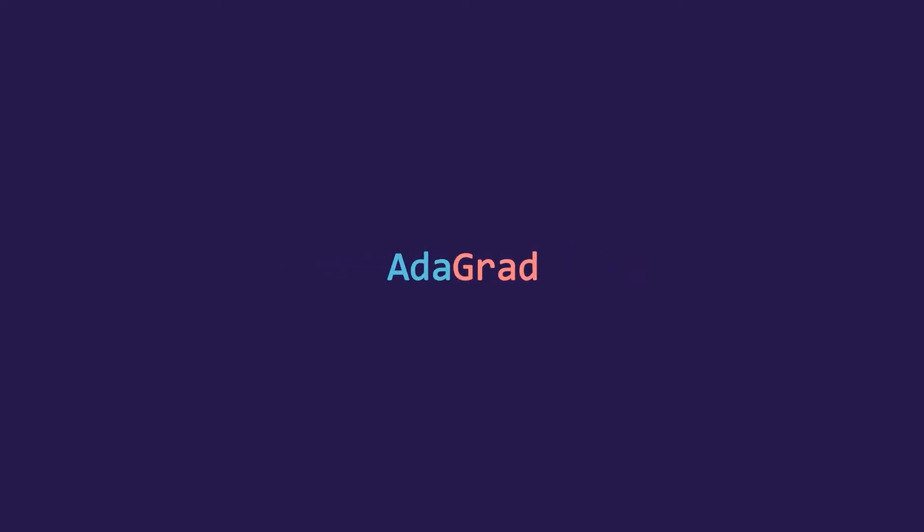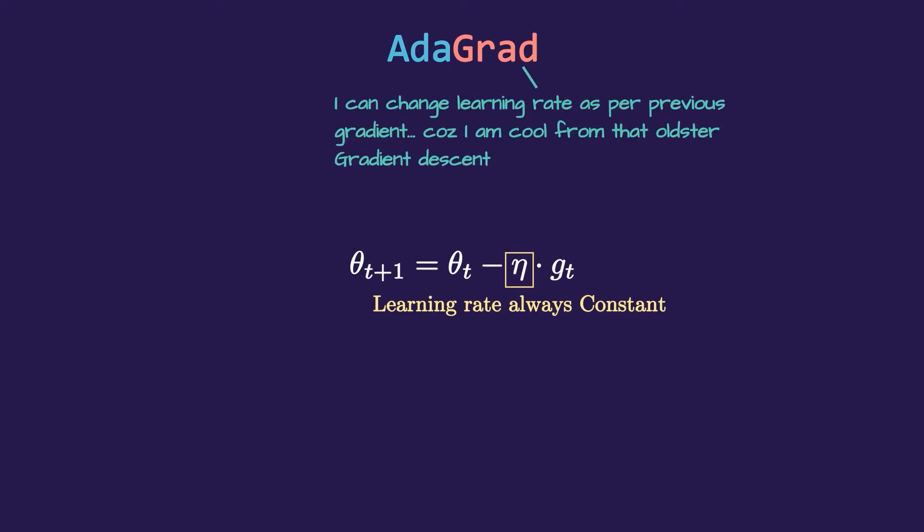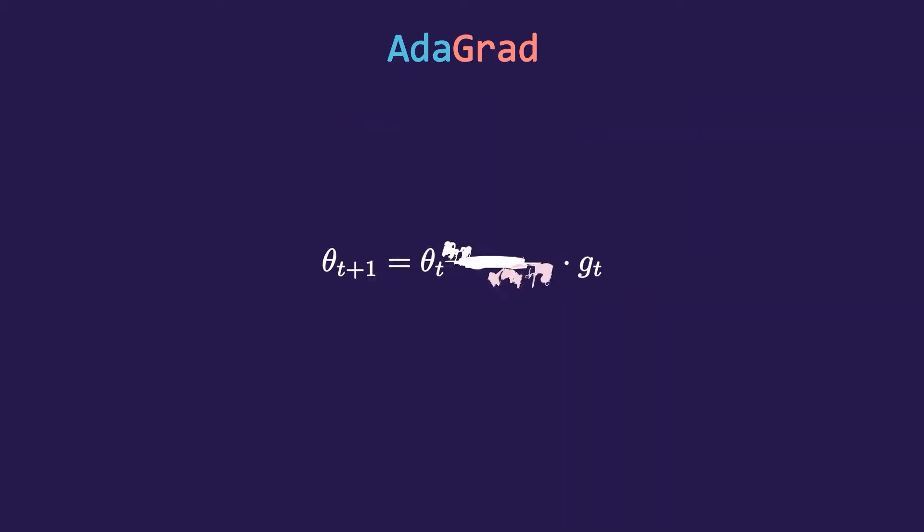When we deal with the update rule of gradient descent, the learning rate parameter is always constant. If you set it to 0.01, for the whole training process it would be the same. So researchers came up with an idea to make an optimizer that can change learning rate as per the situation so it can converge faster, and thus AdaGrad was born.